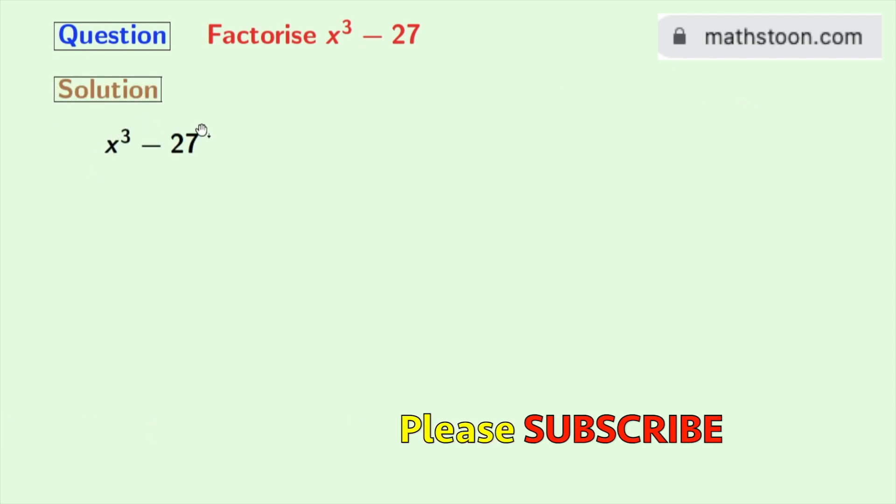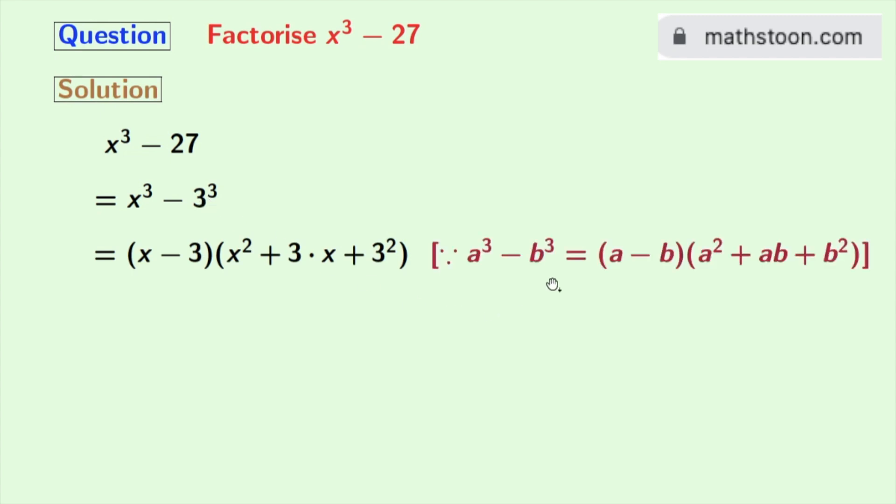This is our given expression. Now we will write x³ - 27 as x³ - 3³. Now look that this is in the form of a³ - b³, so we can apply the formula of a³ - b³.